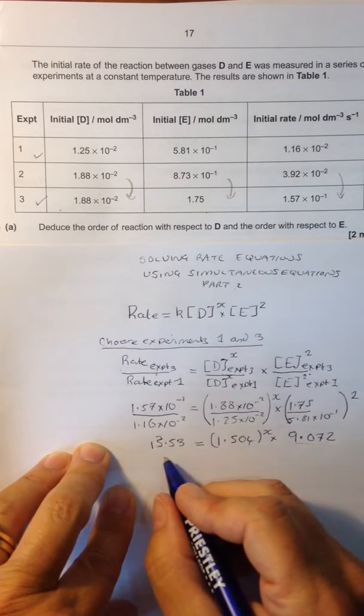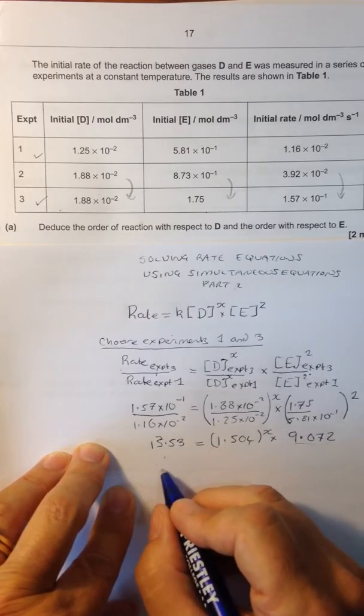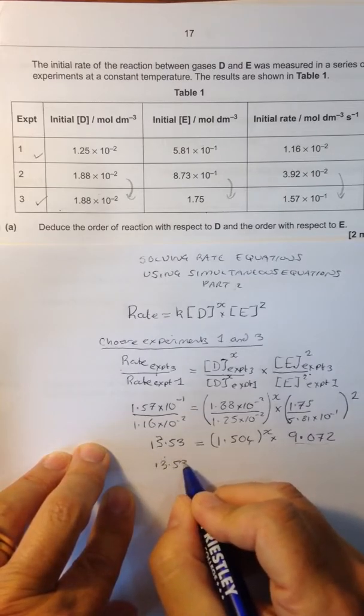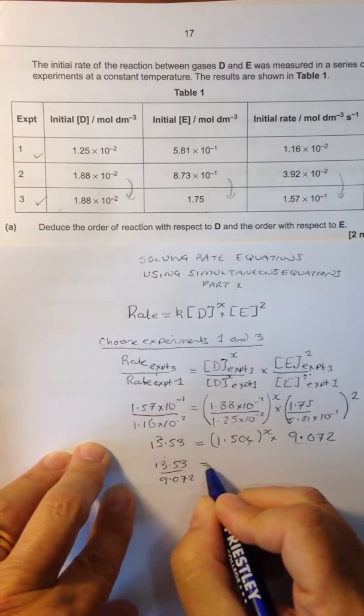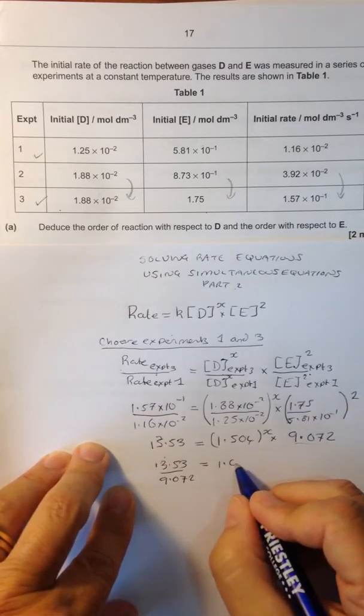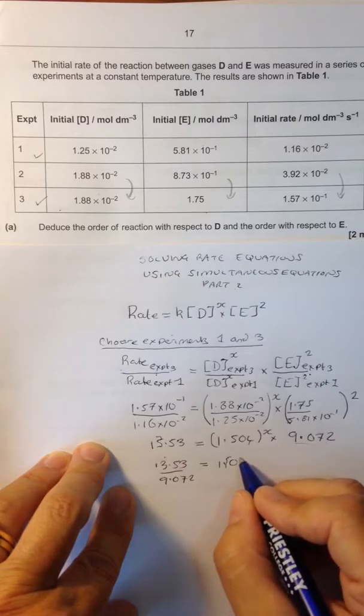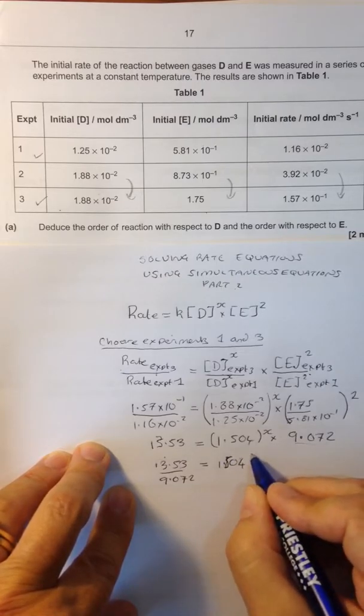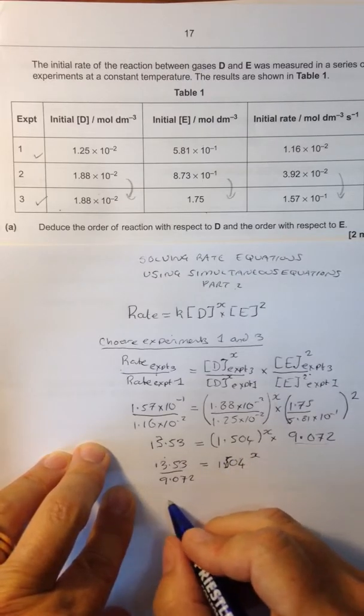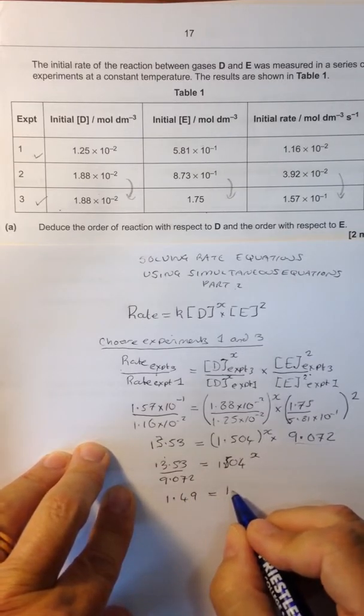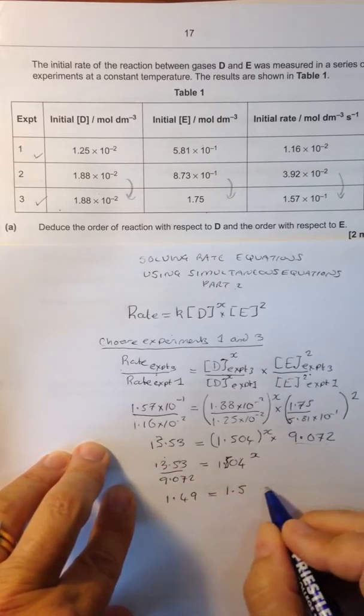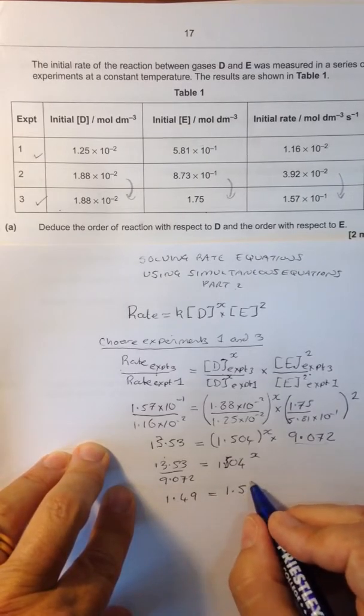Take this over to the other side, that comes to 13.53 over 9.072, which equals 1.504 to the power of X. That comes to 1.49, approximately 1.5 to the X.